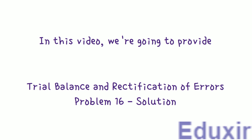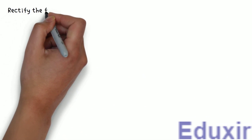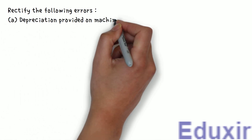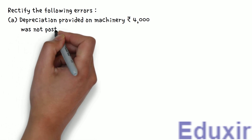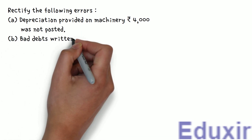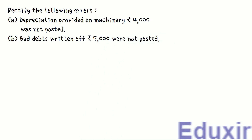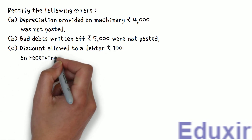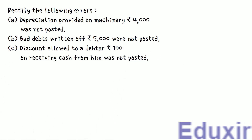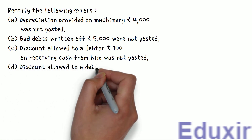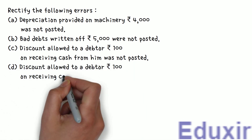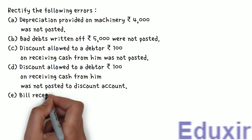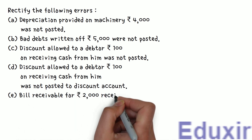The problem statement is as follows: Rectify the following errors. A: Depreciation provided on machinery of ₹4,000 was not posted. B: Bad debts written off of ₹5,000 were not posted. C: Discount allowed to a debtor of ₹100 on receiving cash from him was not posted. D: Discount allowed to a debtor of ₹100 on receiving cash from him was not posted to discount account. E: Bill receivable for ₹2,000 received from a debtor was not posted.